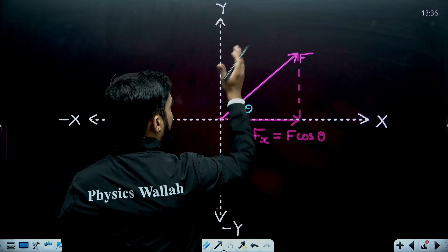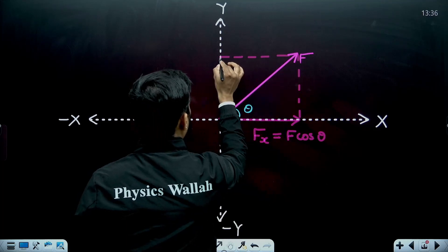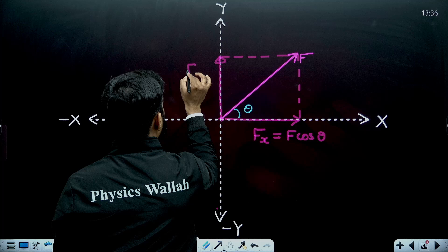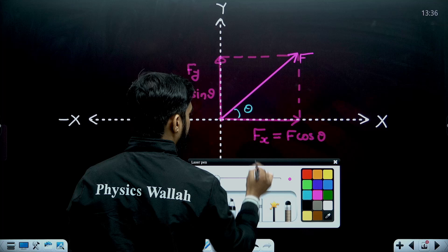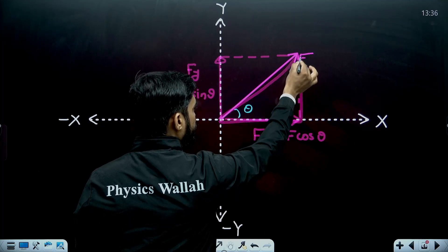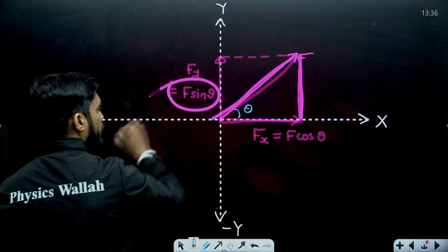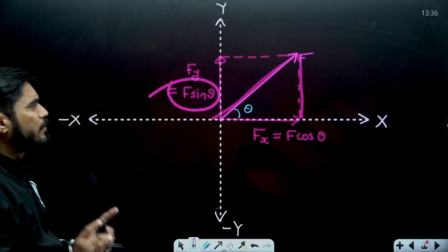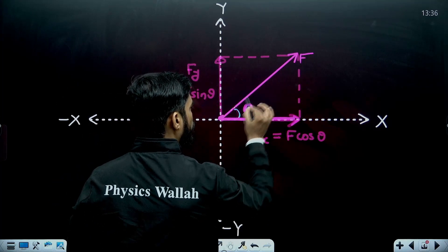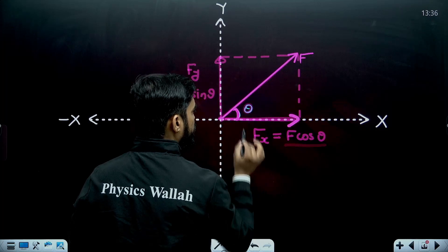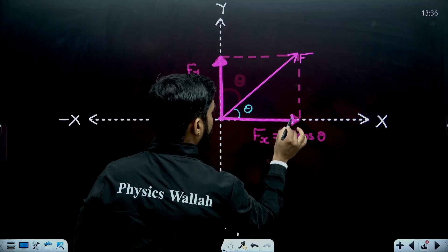Similarly, for the y-component, I will find the projection of this force on the y-axis. This projection is going to be F sin θ — you can see in this triangle that sin θ equals the y-projection divided by F. To remember it: the component that makes the angle theta with the force will be the cos component, and the other will be the sin component.